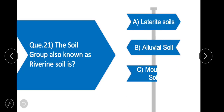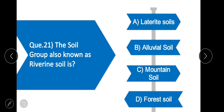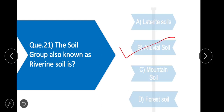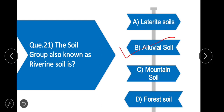Question 21: The soil group also known as river-in soil — option B is correct — alluvial soil. Alluvial soil is formed in river basins, thus it is called river-in soil.